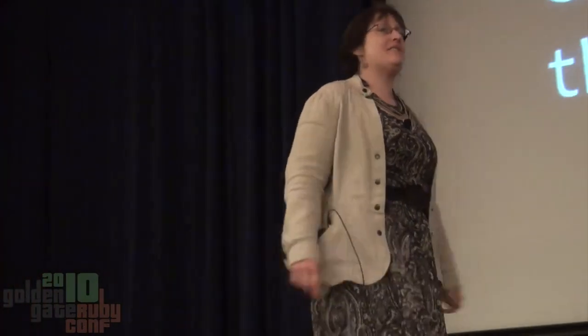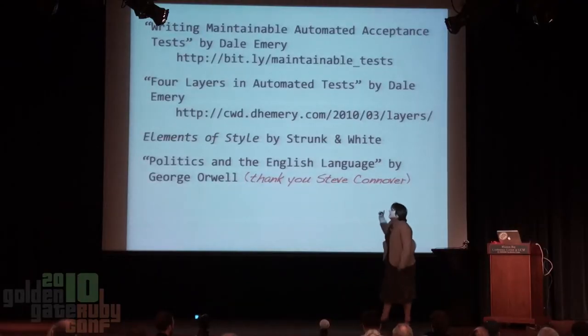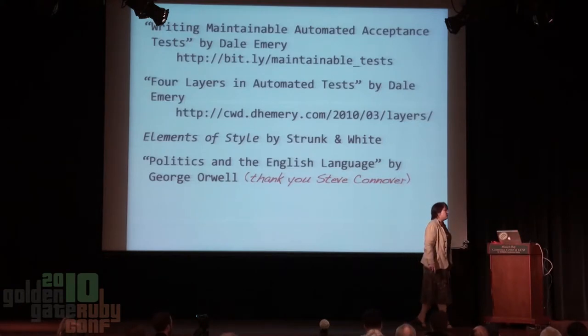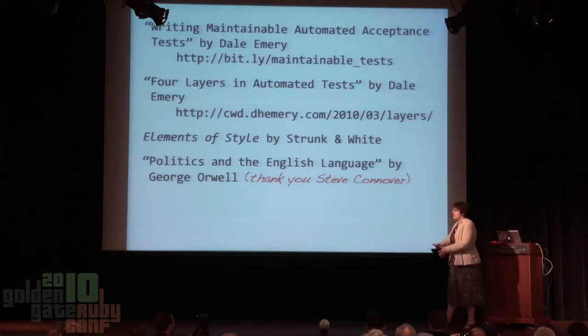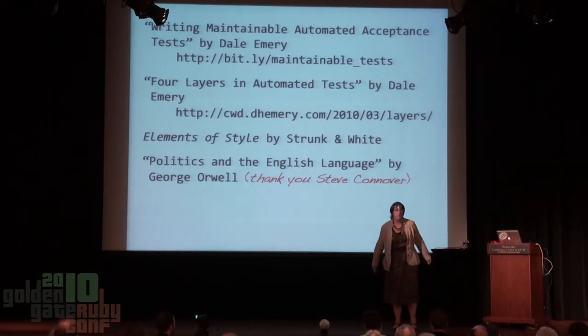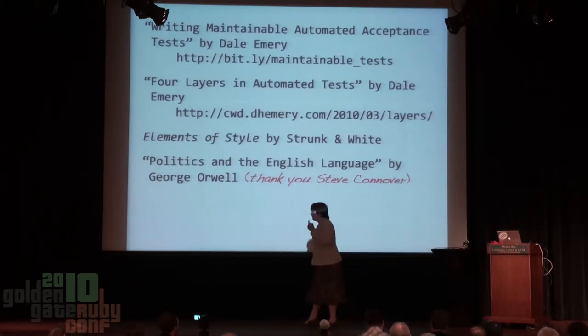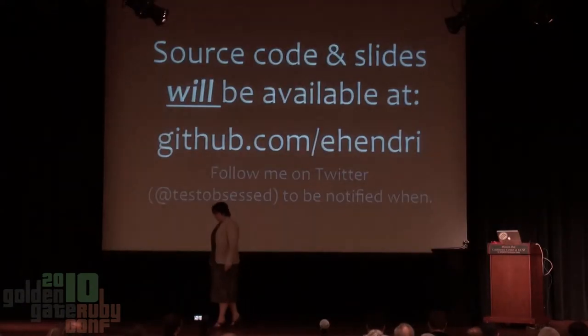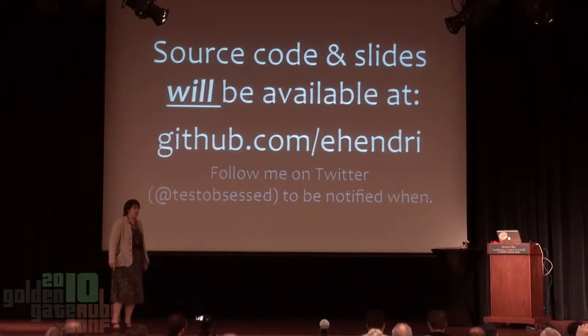Major thanks to Steve Conover — he's the one who reminded me of the George Orwell essay. We are in fact at the end of the talk. There are some references I want to point you to: Dale Emery's two essays on acceptance tests, expressing the essence and leaving out the incidental stuff — really great material. Also Elements of Style, and Politics and the English Language — thank you Steve Conover. My materials are not online yet but will be later today, and I'll tweet as soon as they're up on GitHub.